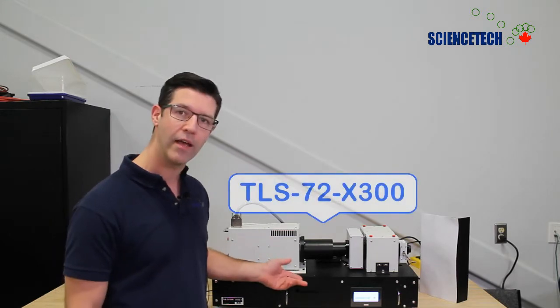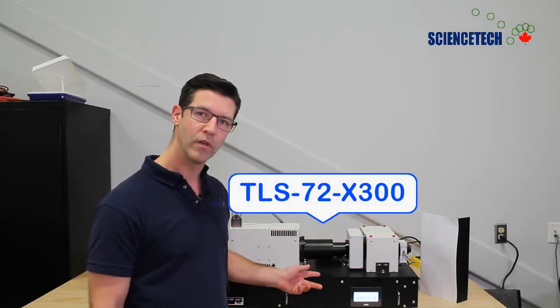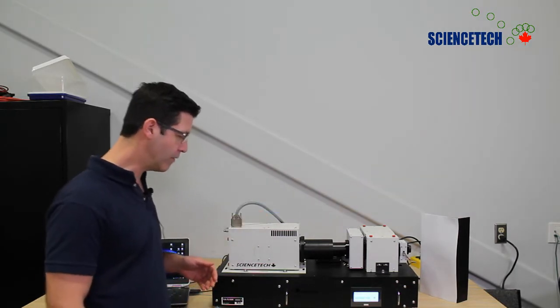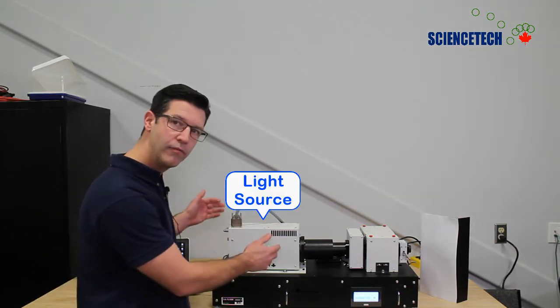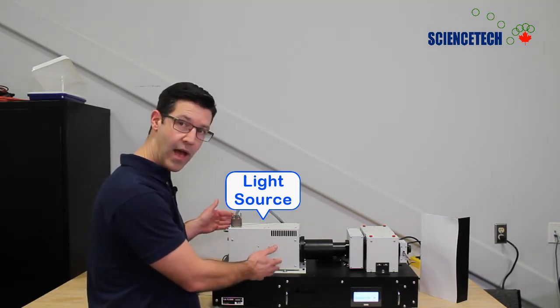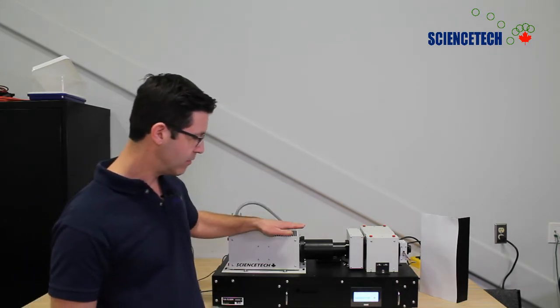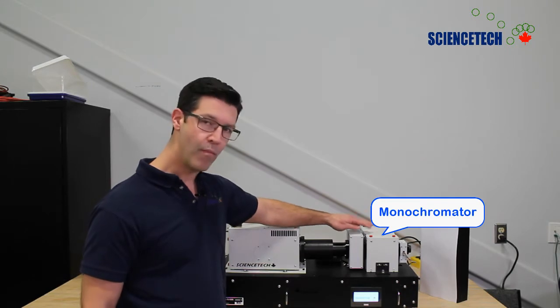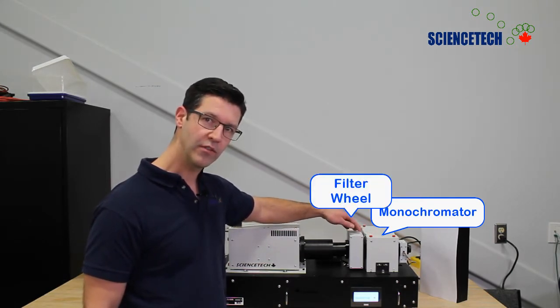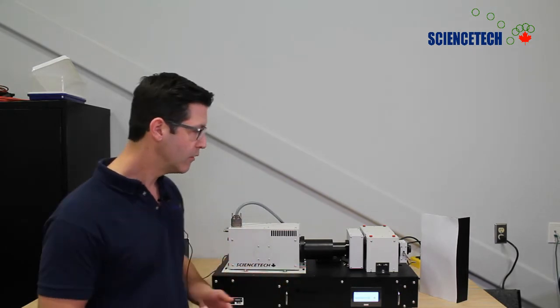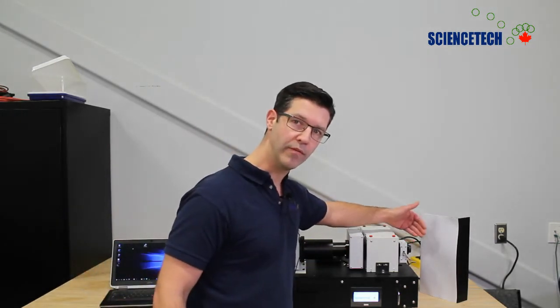We have a couple of models of these systems, but this one specifically is our TLS 72 with a 300 watt Xenon arc lamp. In this system we have a focused beam Xenon short arc lamp housing, and that system sends light into a monochromator and filter wheel system which separates the light out into its different spectral components so that you can make use of them here on the output of the system.